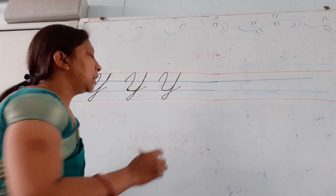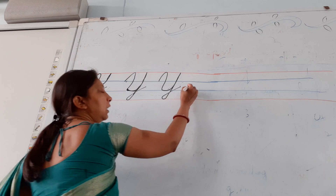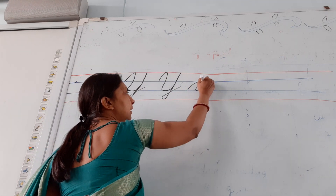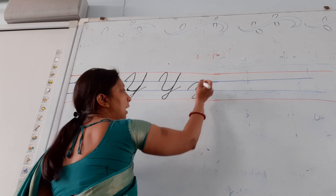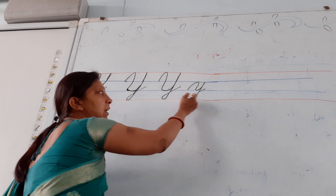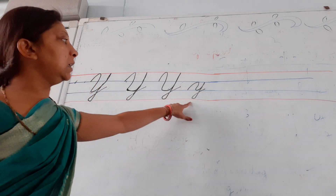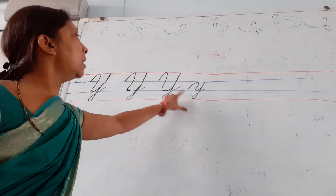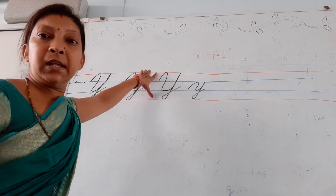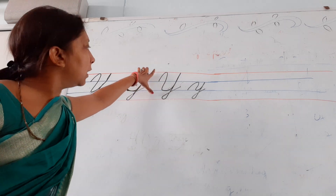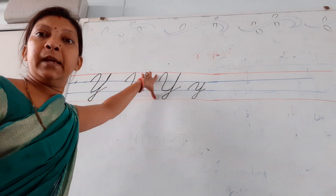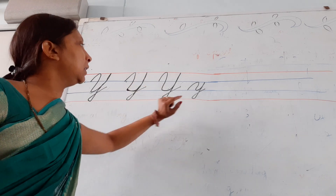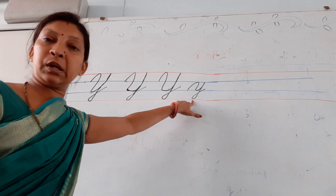This is capital Y and small Y. Small Y starts from the second line and goes to the fourth line. Capital Y comes in all four lines, and small Y comes in three lines.